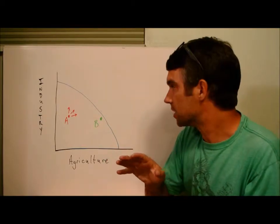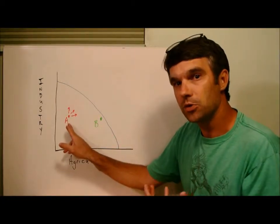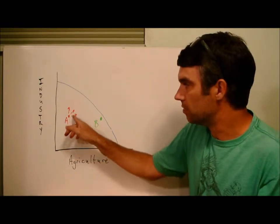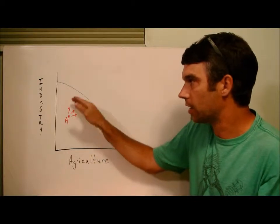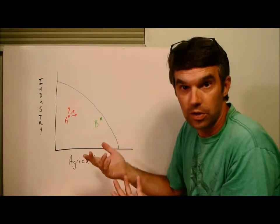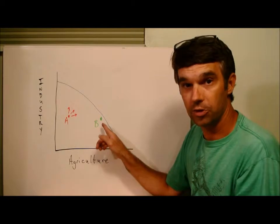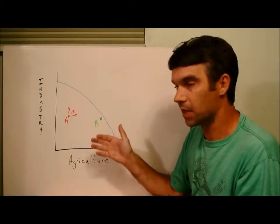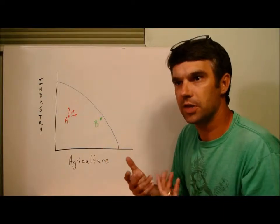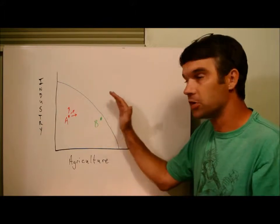Their most pressing problem is: how do we use what we have right now more efficiently? Using it better is going to move point A closer to that PPC, and a movement closer to the PPC is considered a good thing. Country B is a little bit different — they've got some room to improve, but they're operating very close to their PPC. So their question isn't how to get closer to the PPC; they want to figure out how to push their PPC outward.